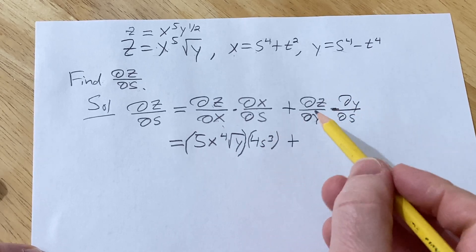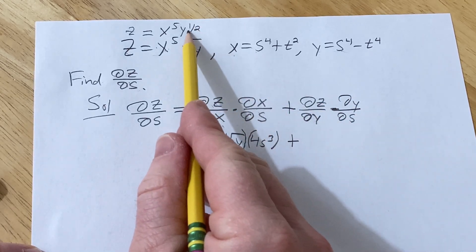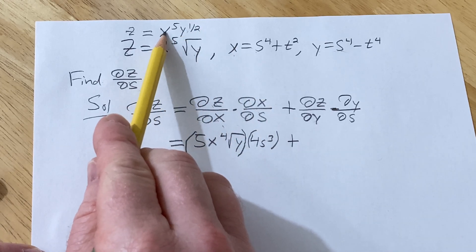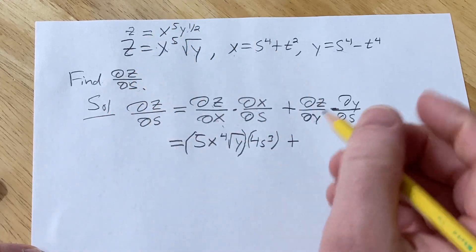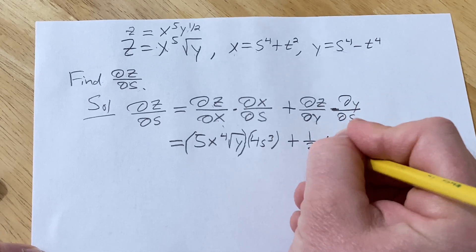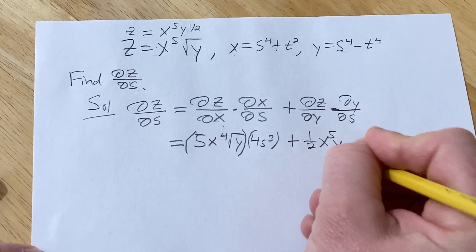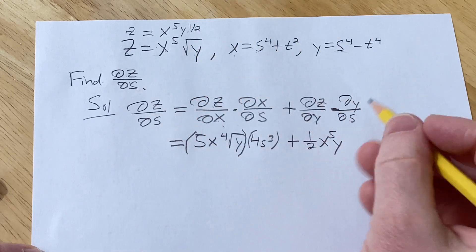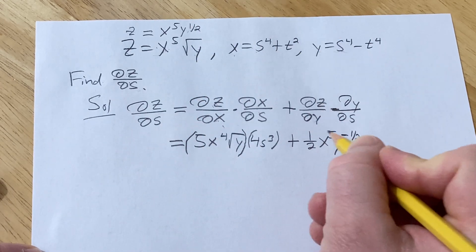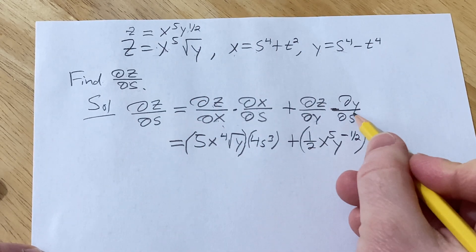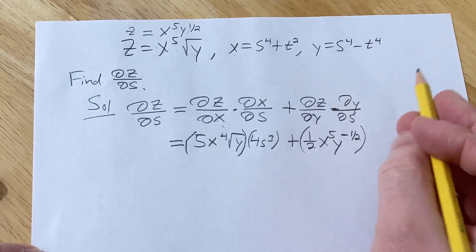Plus del z del y. So now we're going to use this form here with the exponent. The x to the fifth is a constant so we put the one half in the front, x to the fifth, and then subtract one from the exponent. One half minus one is negative one half. And then times del y del s which is going to be 4s cubed because that's zero.